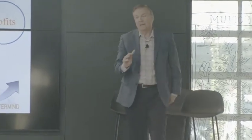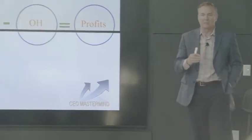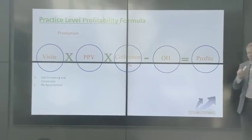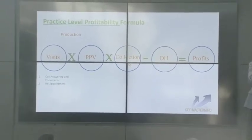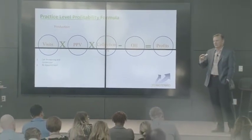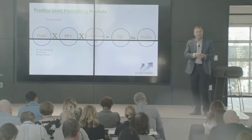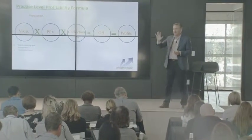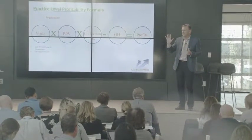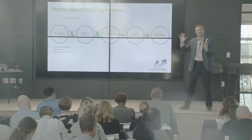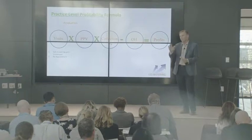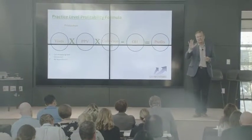There are just a few simple rules. Rule number one: one person is responsible for reappointing for every type of appointment. For a hygiene patient, the hygienist is responsible — most hygienists prefer that; they want to control their schedule. For a patient leaving a restorative appointment needing another, in most offices it's the assistant, because the assistant knows how much time is needed and understands the doctor can't be in two places at once.